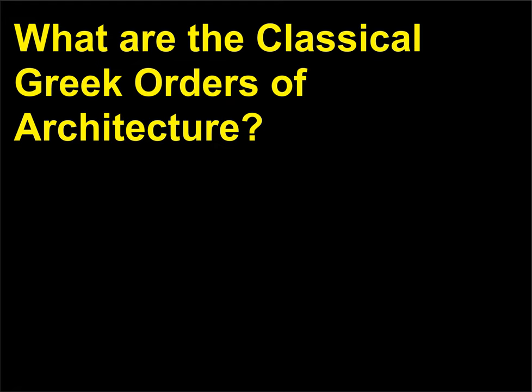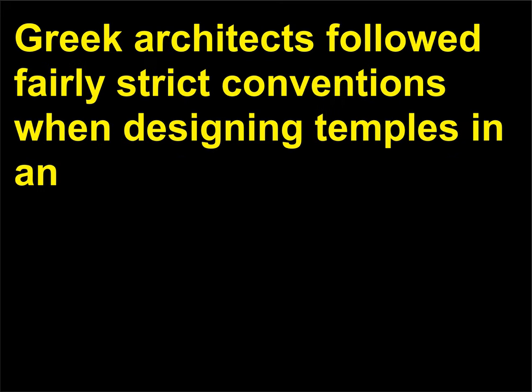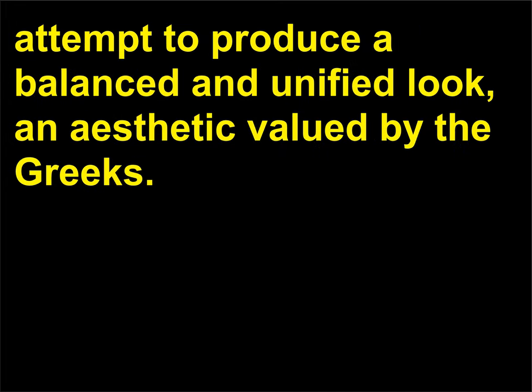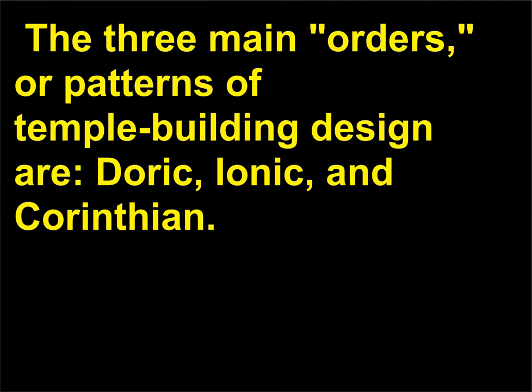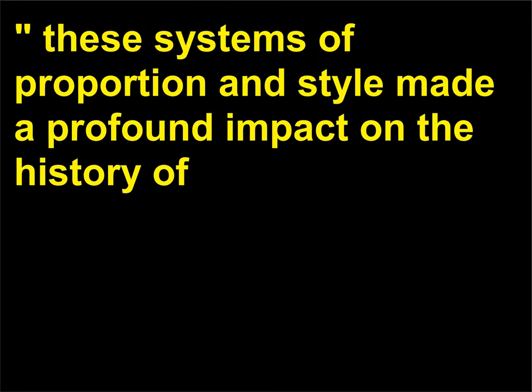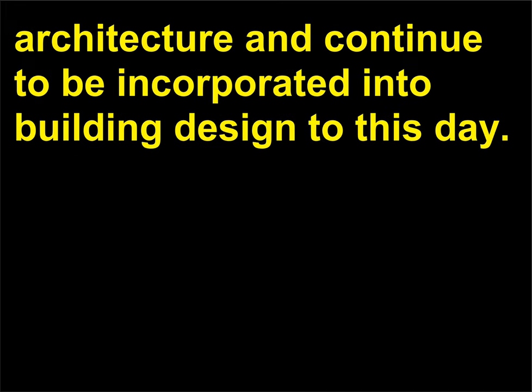What are the classical Greek orders of architecture? Greek architects followed fairly strict conventions when designing temples in an attempt to produce a balanced and unified look — an aesthetic valued by the Greeks. The three main orders, or patterns of temple building design, are Doric, Ionic, and Corinthian, referred to as the classical Greek orders of architecture. These systems of proportion and style made a profound impact on the history of architecture and continue to be incorporated into building design to this day.